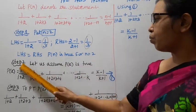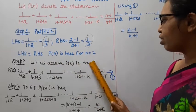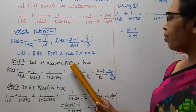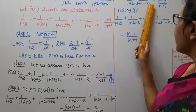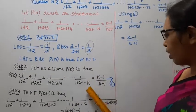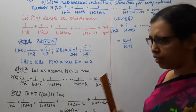Step 2: Let us assume P(k) is true, where n is replaced by k. That assumption is worth it.